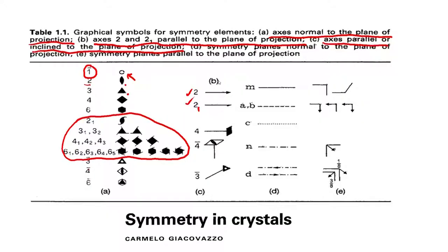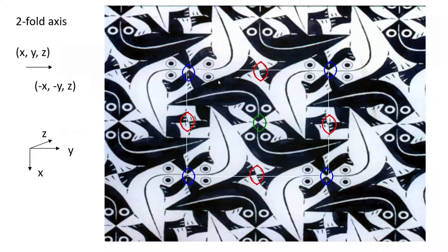Here is an example of the presence of a two-fold rotation axis which is now perpendicular to the plane. In this Escher's diagram, you see some lizards — white and black. This is a very beautiful representation. Even though Escher himself was not a crystallographer, all of crystallography is there in Escher's diagram.